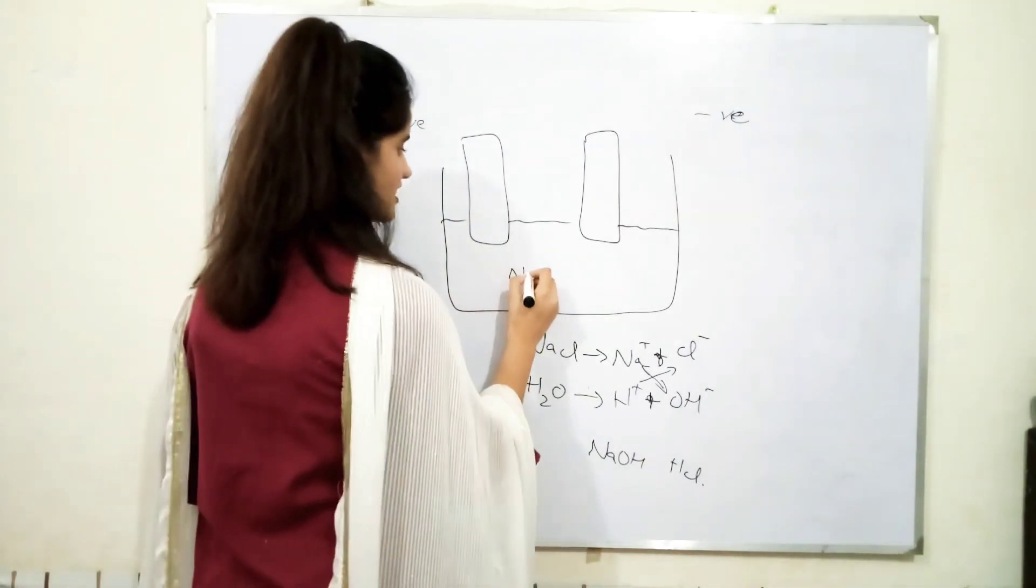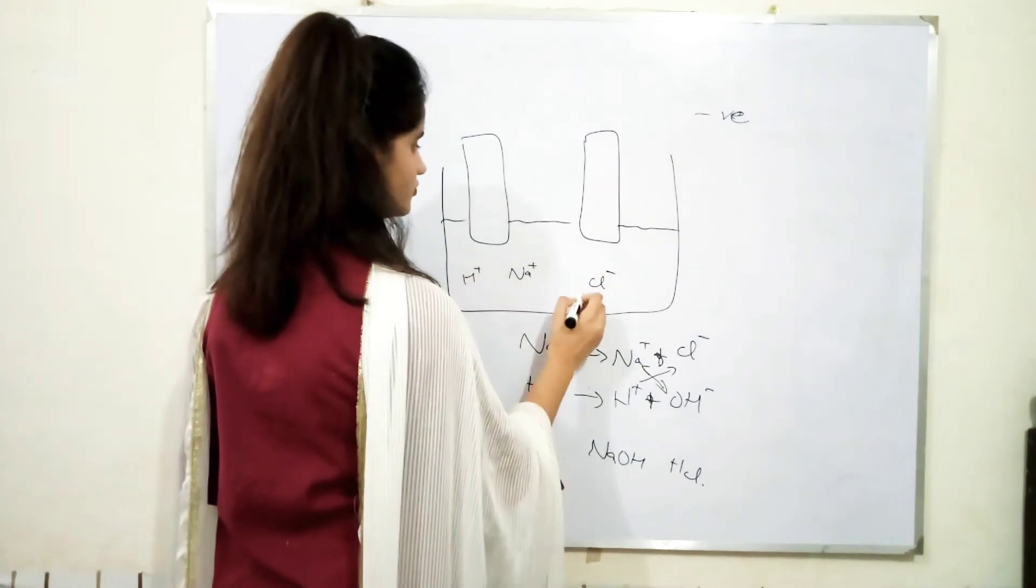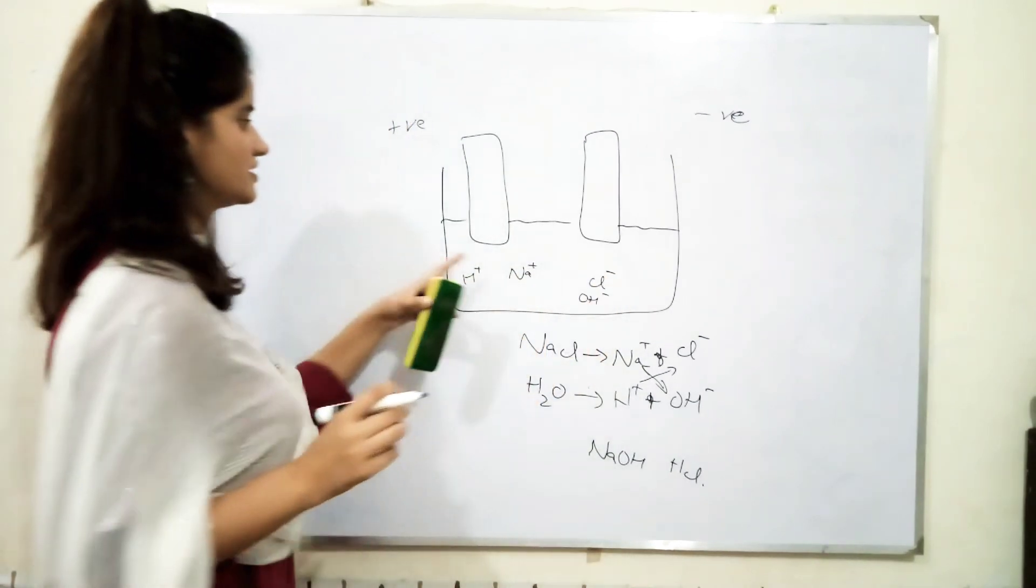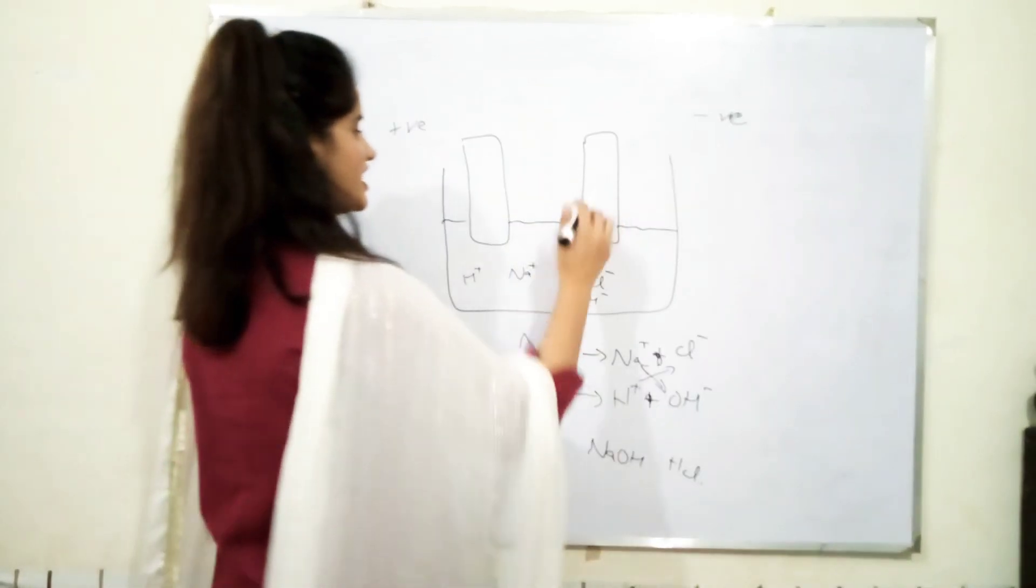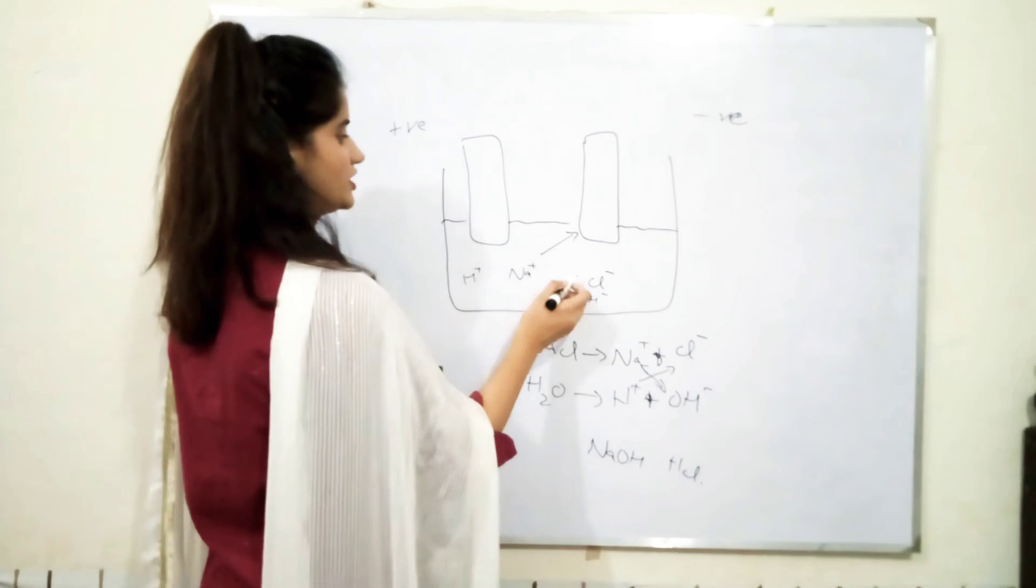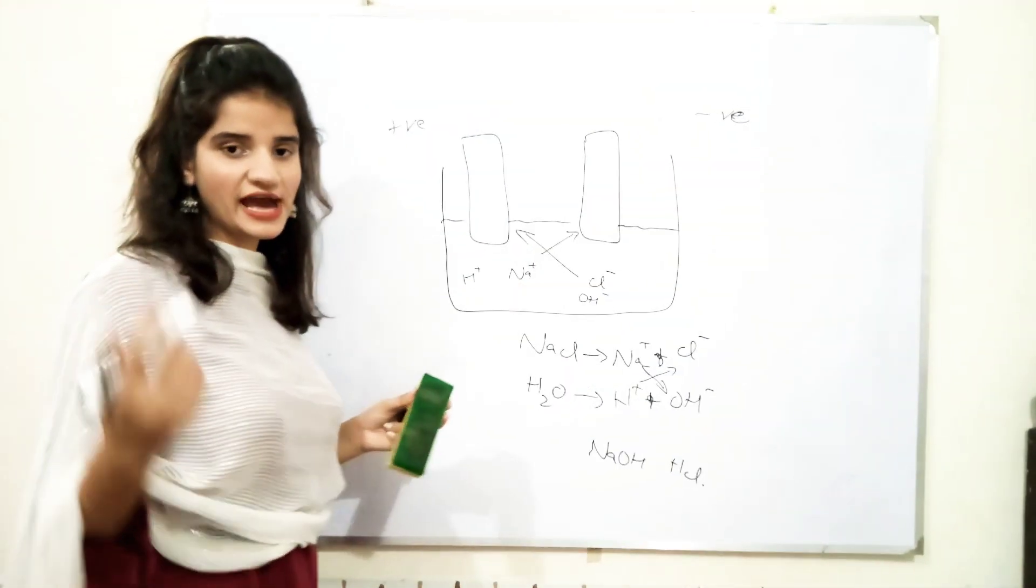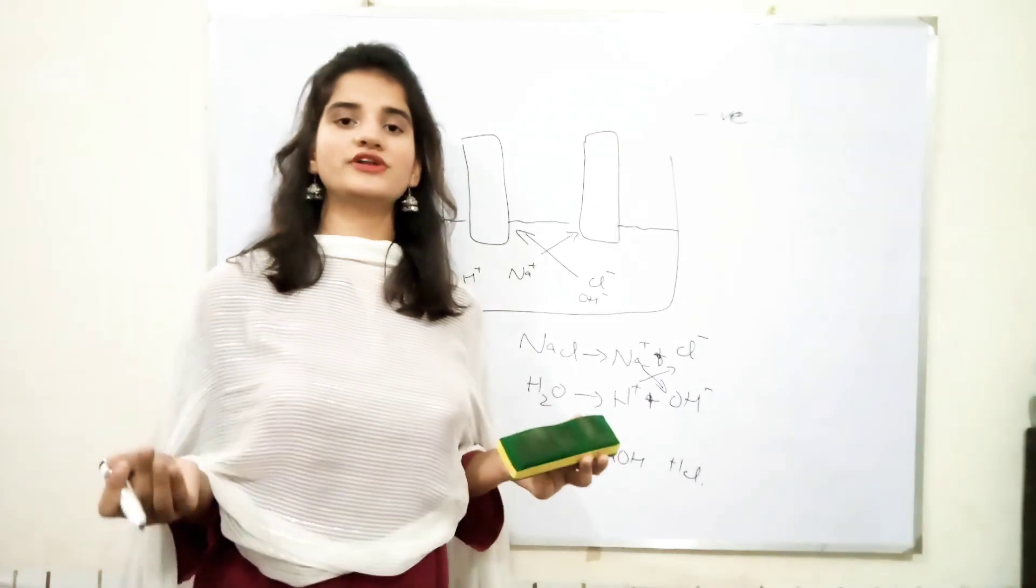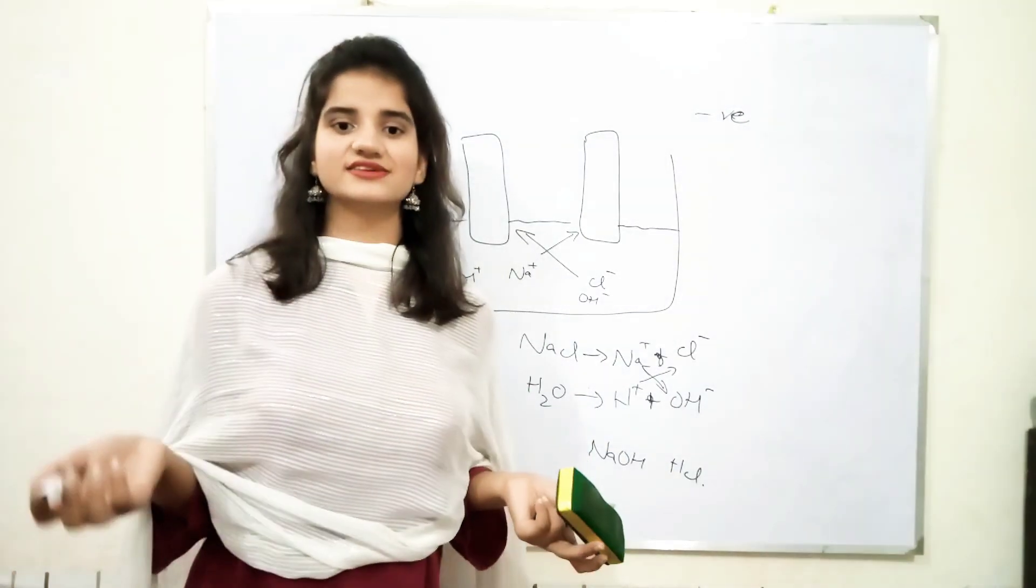So, what will happen here? Na positive, Cl negative, H positive, OH negative. This sodium will attract toward the negative terminal while this chlorine will attract toward the positive terminal. What happens here actually? Cathode attract cations while anode attracts anions.